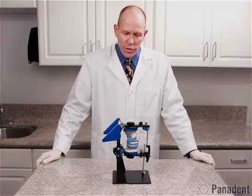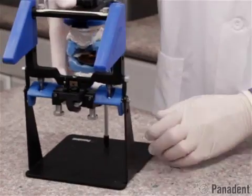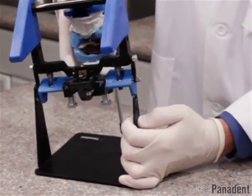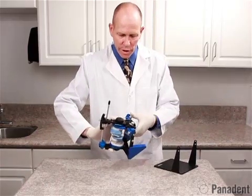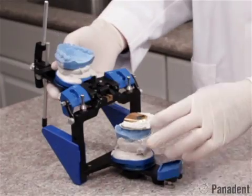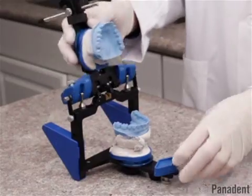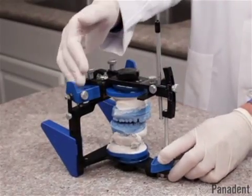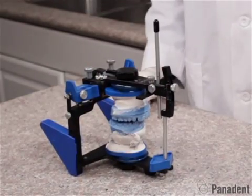The plaster is now set so we can go ahead and remove the articulator from the mandibular mounting stand by springing one side out over the Dynalink pin and removing the articulator and setting it right side up on the countertop. We can then open the articulator up to remove the centric relation record. And we can now adjust the protrusive angulation using the protrusive check bite at this time.